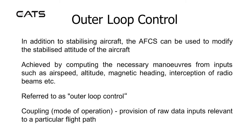Outer loop control. In addition to stabilising the aircraft, the automatic flight control system can be used to modify the stabilised attitude of the aircraft. This is achieved by computing the necessary manoeuvres from inputs such as airspeed, altitude, magnetic heading, interception of radio beams, etc. This is referred to as outer loop control.